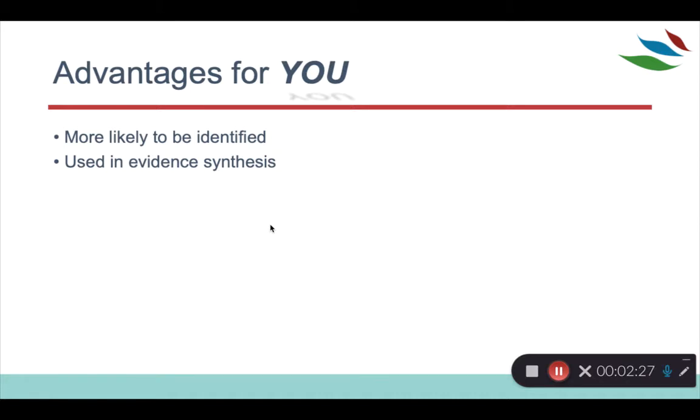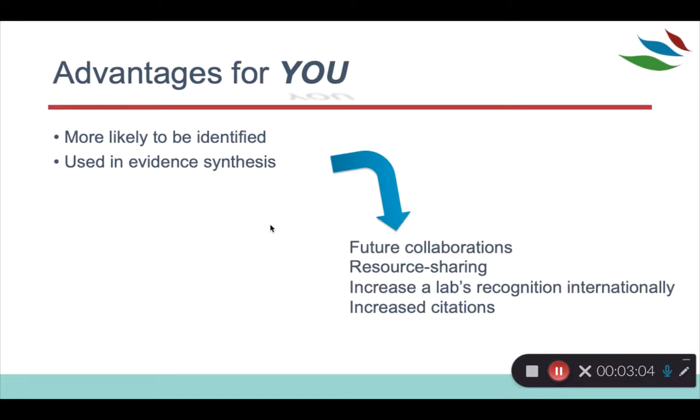So in addition to improving science as a whole, there are some specific advantages for you in terms of not only operating from an open science perspective, but operating in a way that will make your research synthesis-ready. So if it's synthesis-ready, we consider it more likely to be identified by people that are doing a literature search for your study. If it's lost somewhere and not archived well, then it may be very difficult to be identified and used in an evidence synthesis. And what that means kind of in the long term is that that could open up many potential opportunities for future collaborations of individuals that are interested in the same topics you're interested in, potential for resource sharing because of those collaboration, as well as increasing kind of your lab or your team's recognition internationally. And finally, kind of the hard coin of academia is increased citations. If your study is identified and used in evidence synthesis, that's a citation that you did not have before that point.